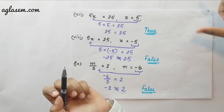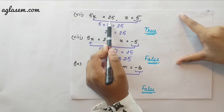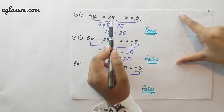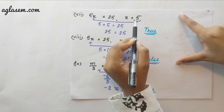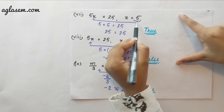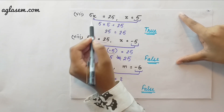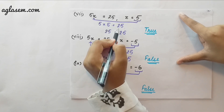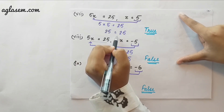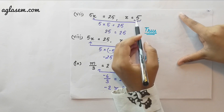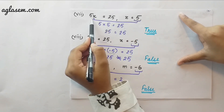In the next question, we have the equation 5x equals to 25 and the value of x is 5. We put the value into the equation: 5 into 5 equals to 25. 25 is equal to 25, hence this value of x satisfies the equation.